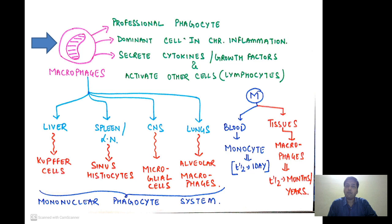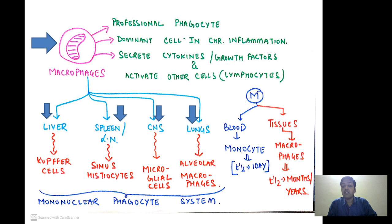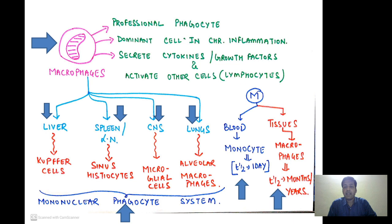Macrophages are also called the professional phagocyte and they are the dominant cell in chronic inflammation. They are responsible for secretion of multiple cytokines and growth factors, as well as activation of other cells, especially lymphocytes. Together — Kupffer cells, sinus histiocytes, microglial cells, and alveolar macrophages — they form the mononuclear phagocyte system, previously called the reticuloendothelial system, a term no longer used. Monocytes in the blood have a half-life of just one day, whereas tissue macrophages have a half-life of months or even years.